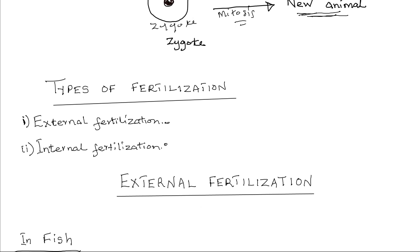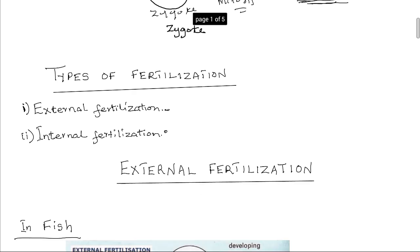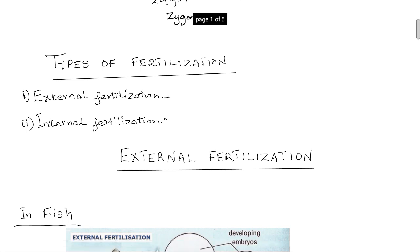In external fertilization the male and female gametes fuse outside the body. It occurs in animals such as fish and amphibians. For external fertilization to occur, a water environment is needed. During this process, the male and female individuals of the same species come into close proximity and release their gametes into the surrounding water where fertilization takes place.